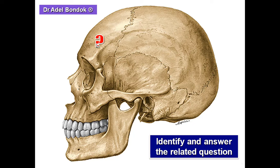This is the lateral bone, the squamous part of the temporal bone, the mastoid process, and the greater wing of the sphenoid. This is the zygomatic arch.